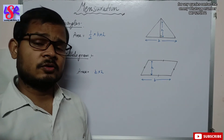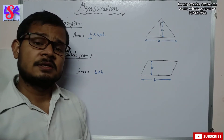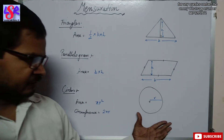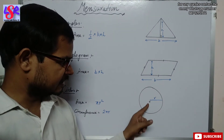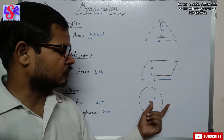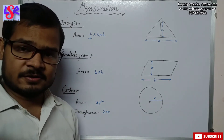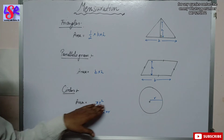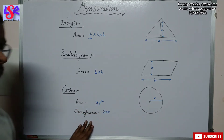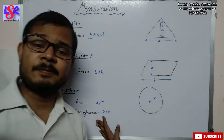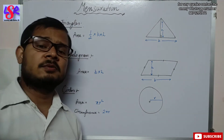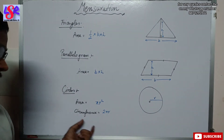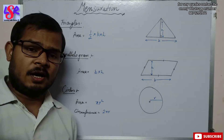The next figure is the circle. The center is a fixed point, and the distance from the center to the circle is known as the radius. The area of the circle is pi r squared, and the circumference — which is also known as the perimeter for a circle — is 2 pi r.